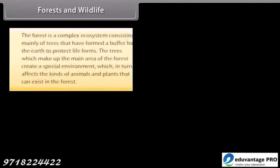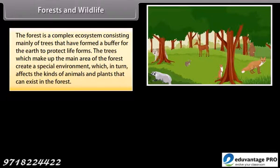Forests and Wildlife. The forest is a complex ecosystem consisting mainly of trees that have formed a buffer for the earth to protect life forms. The trees which make up the main area of the forest create a special environment which in turn affects the kinds of animals and plants that can exist in the forest.